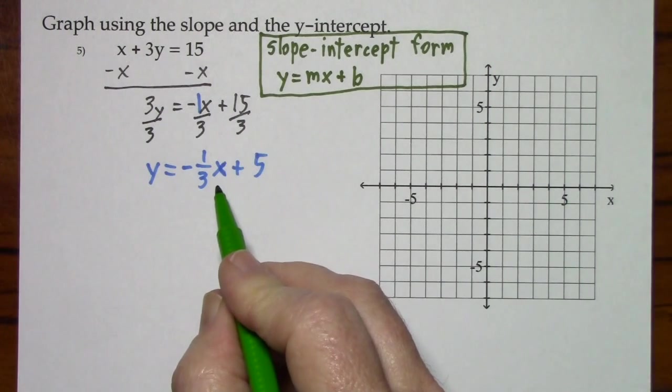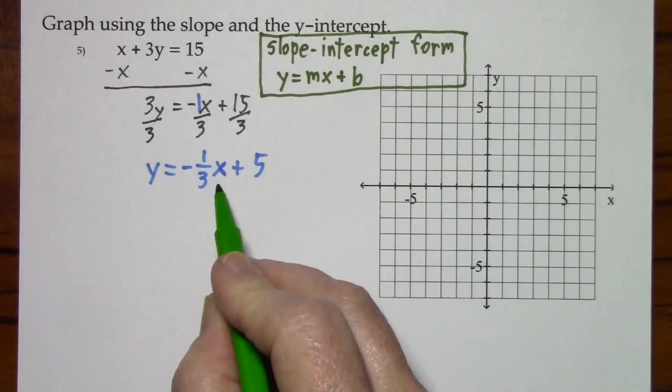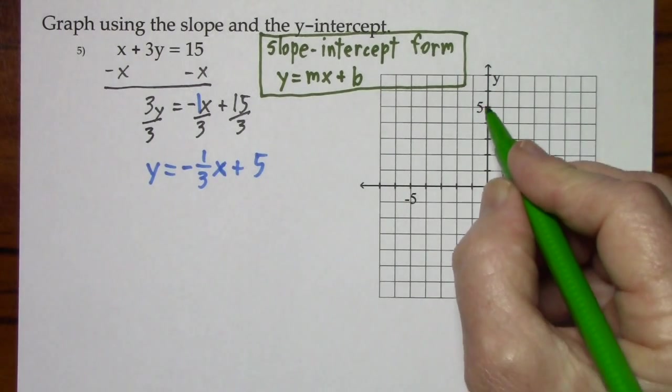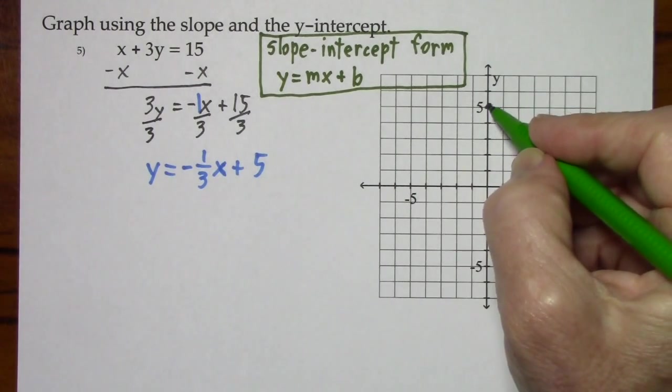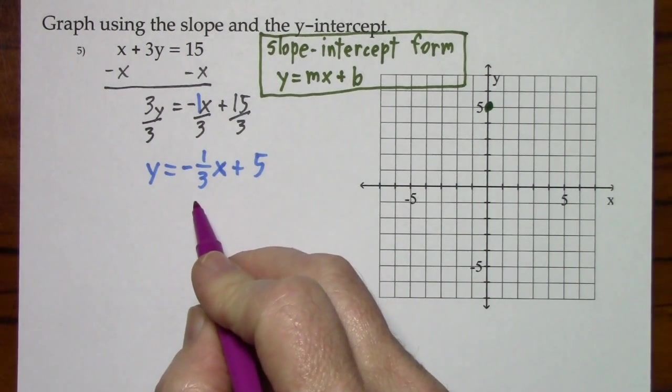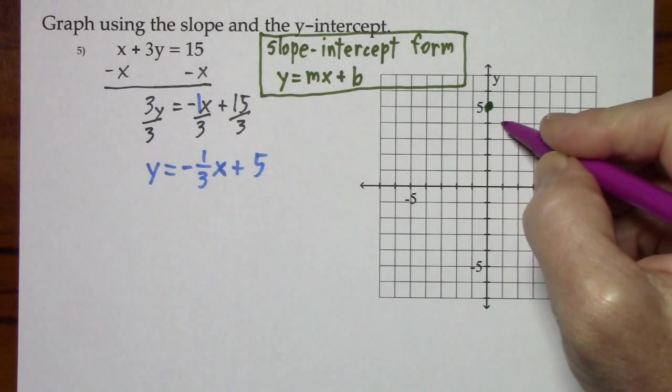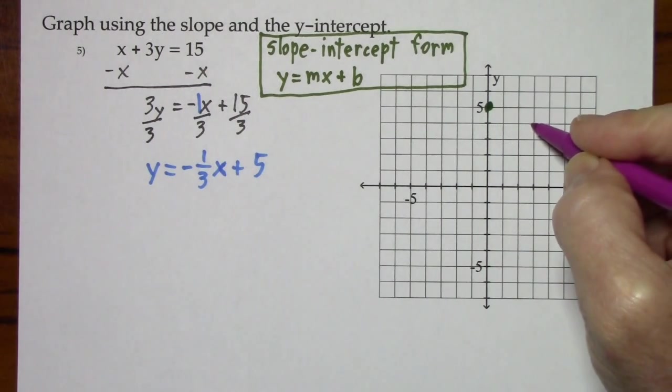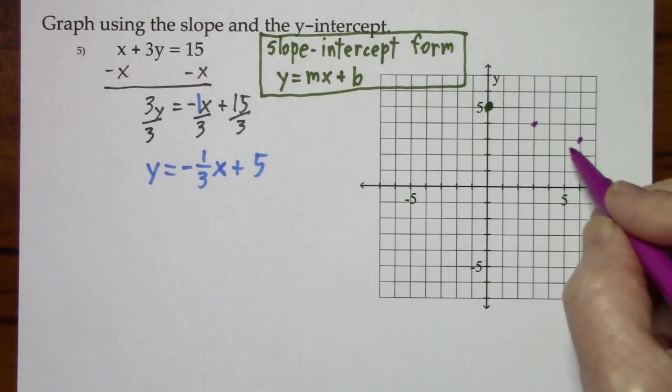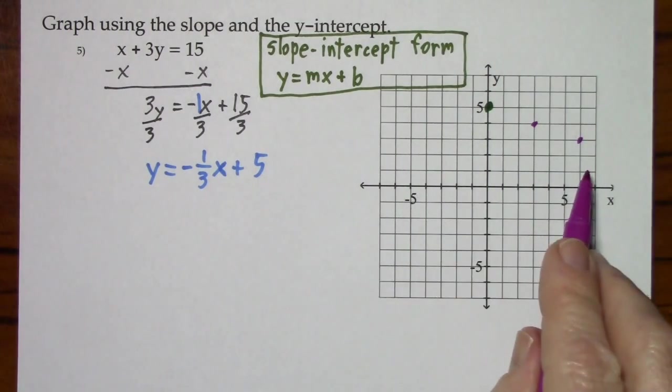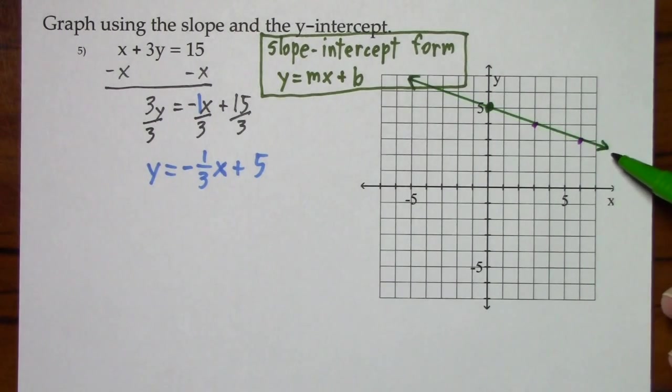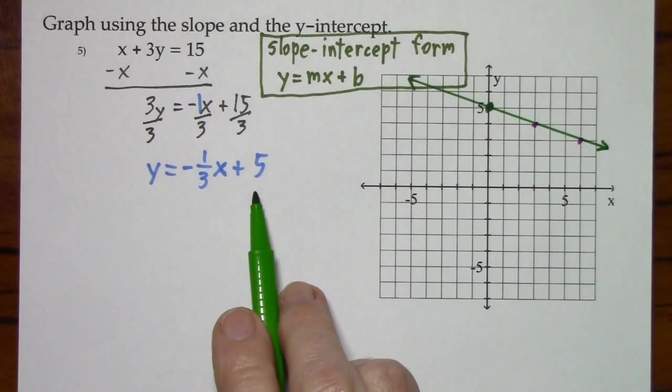When x is 0, this goes away. And we have y equals 5. So when x is 0, y is 5. And the slope is negative 1 third. So that's down 1 over 3, down 1 over 3. I like to do it twice just so it's easier to draw my line. So we graphed the equation using slope and y-intercept.